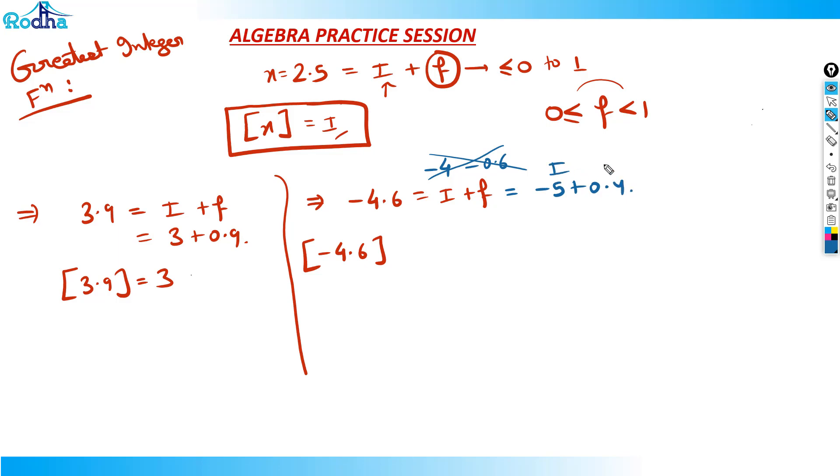So its greatest integer function is always the next integer which is just less than or equal to x. For minus 4.6, the next integral value just less than minus 4.6 is minus 5. For 3.9 it is 3. Minus 5 is just less than minus 4.3 is just less than 3.9.